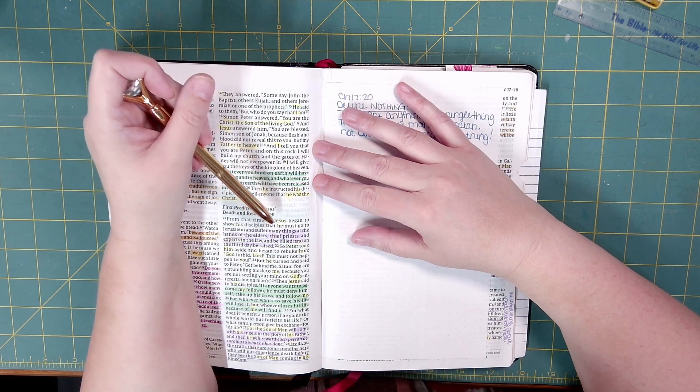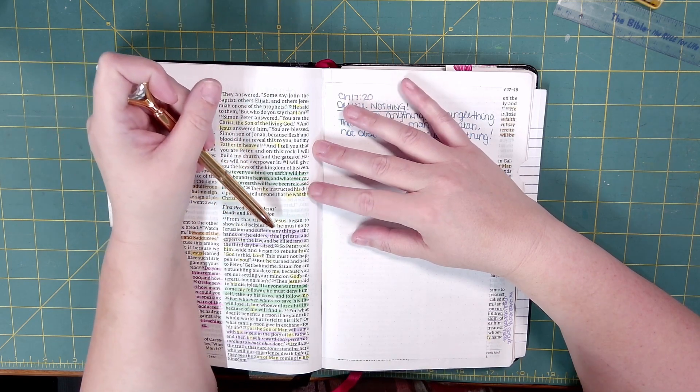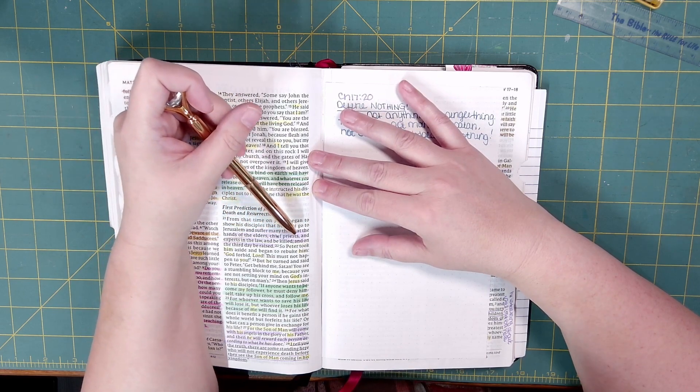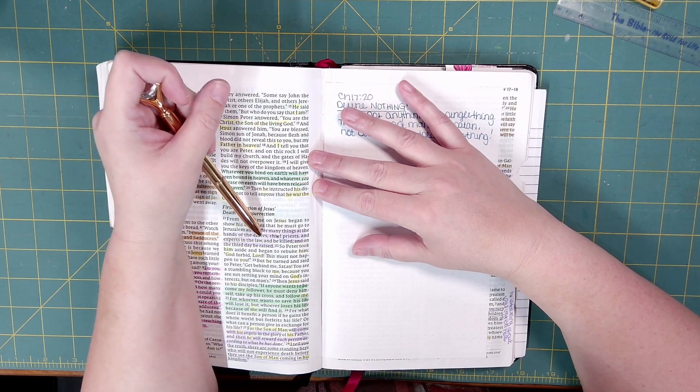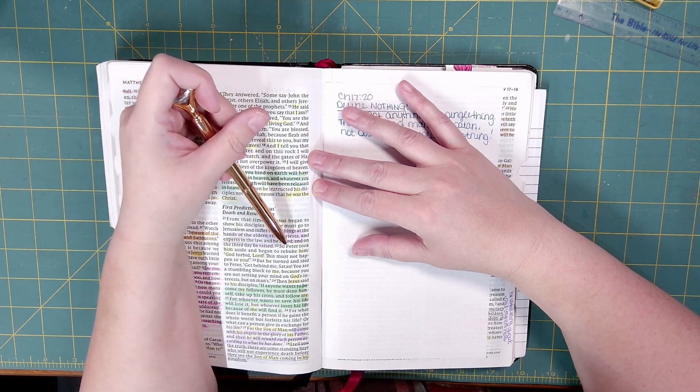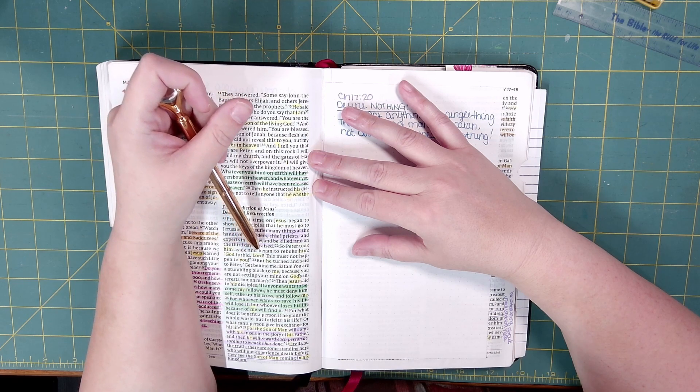From that time on, Jesus began to show his disciples that he must go to Jerusalem and suffer many things at the hands of the elders, chief priests, and experts in the law, and be killed, and on the third day be raised.